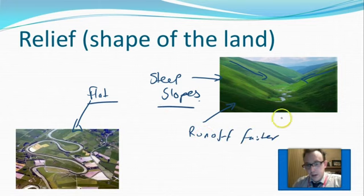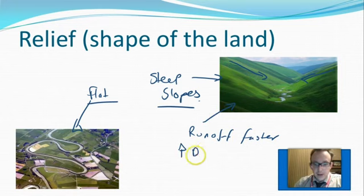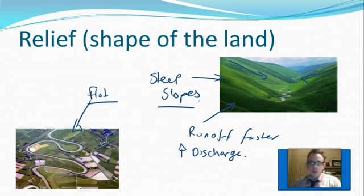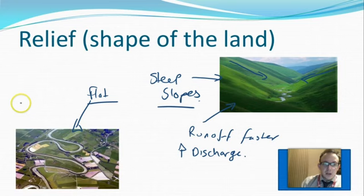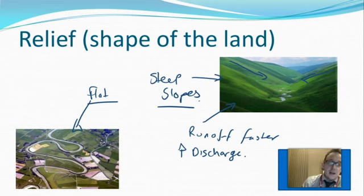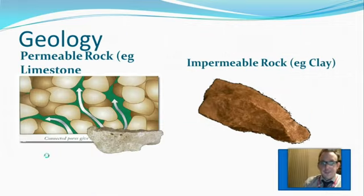The time it takes water to get down into the river is faster on steep slopes, meaning the discharge of the river increases, which in turn leads to a higher chance of flooding. Where the land is flat, because there's no gradient, the water flows into the river much slower. The discharge doesn't rise as quickly because the runoff isn't as fast, so the chance of flooding is less.